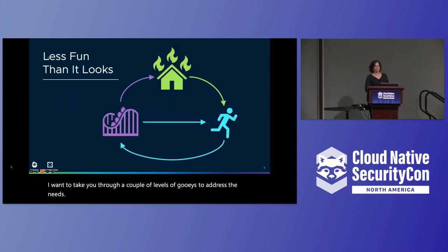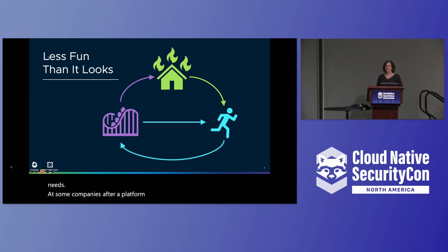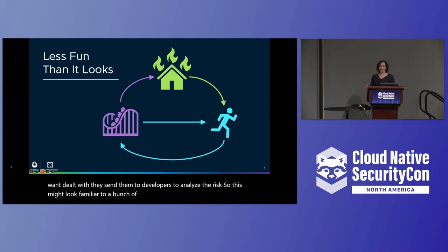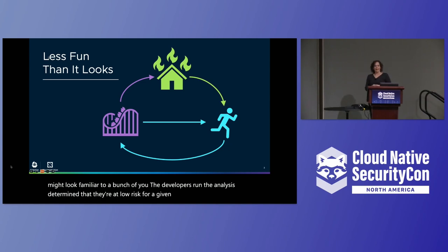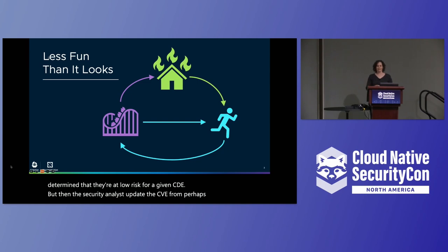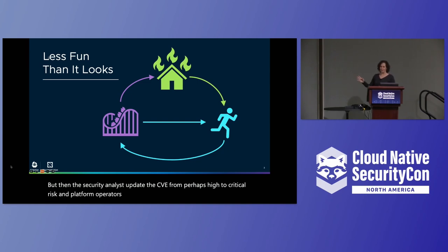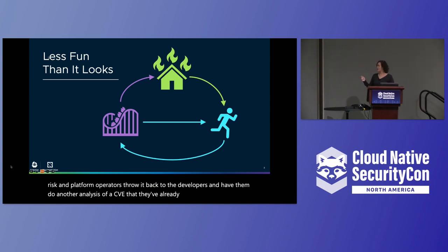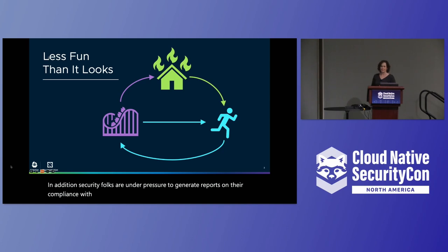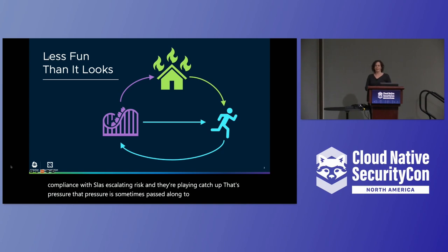At some companies, after a platform operator identifies those CVEs they want dealt with, they send them to developers to analyze the risks. The developers run the analysis and determine that they're at low risk for a given CVE. But then the security analysts update the CVE from perhaps high to critical risk, and platform operators throw it back to the developers and have them do another analysis of a CVE that they've already done. In addition, security folks are under pressure to generate reports on their compliance with SLAs, escalating risk, and they're playing catch-up. That pressure is sometimes passed along to the devs as well.